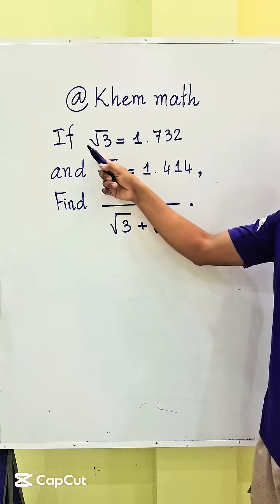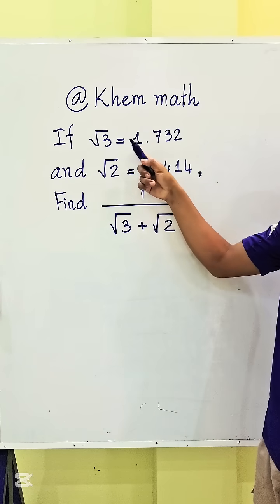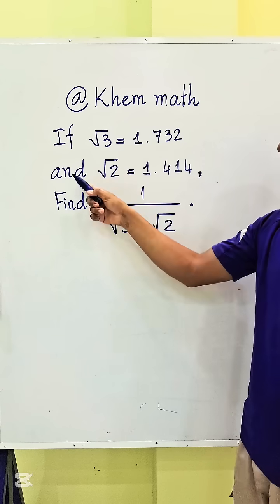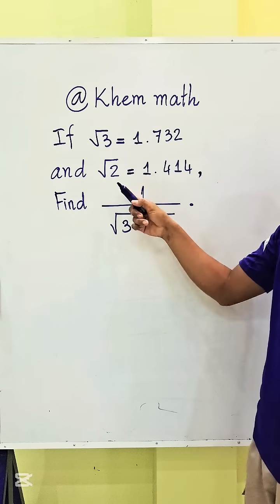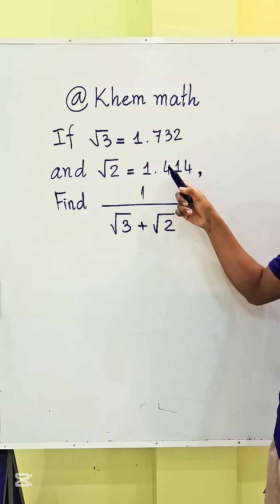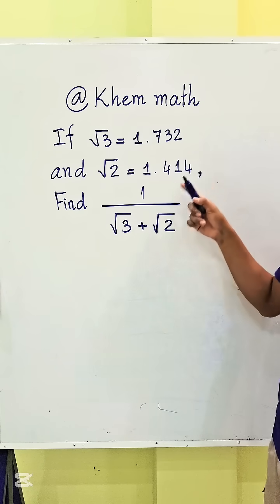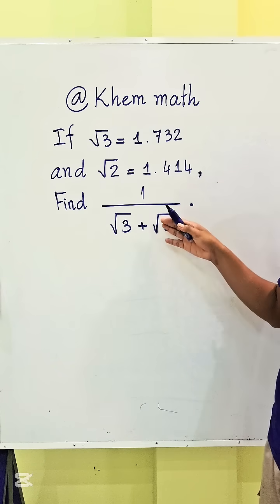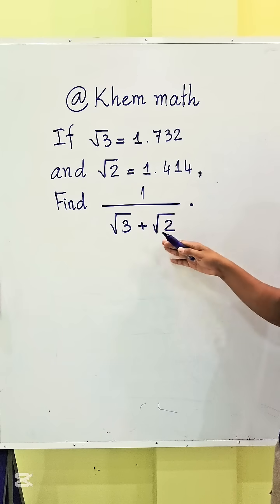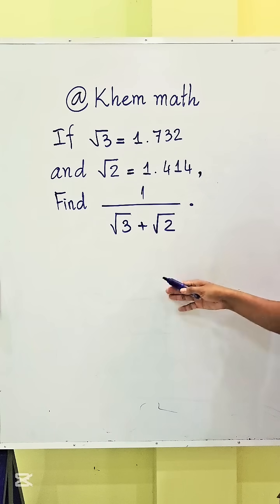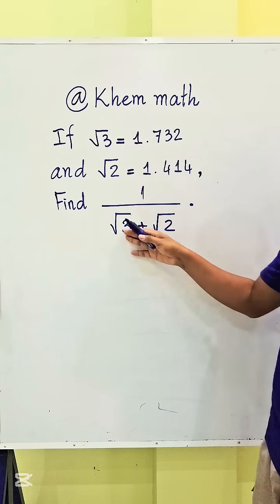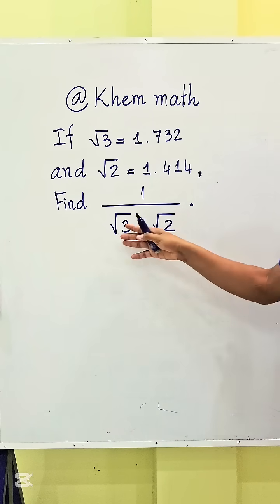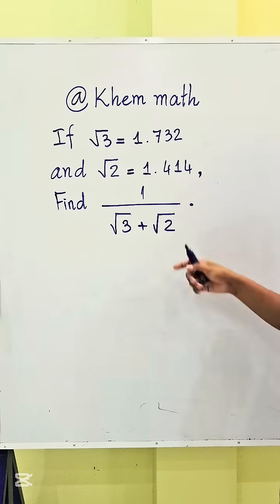If square root 3 equals 1.732 and square root 2 equals 1.414, find the value of 1 divided by square root 3 plus square root 2. Here we must multiply by square root 3 minus square root 2.